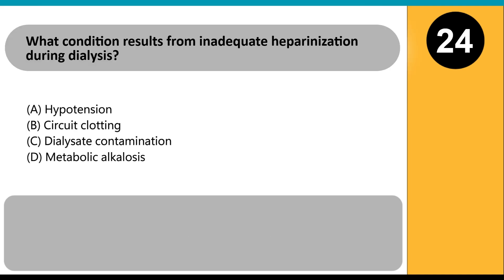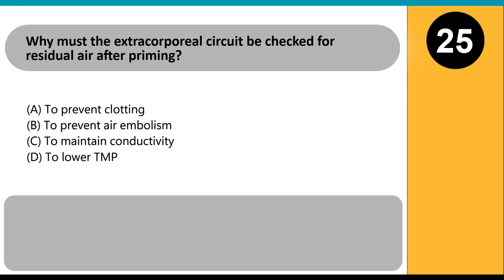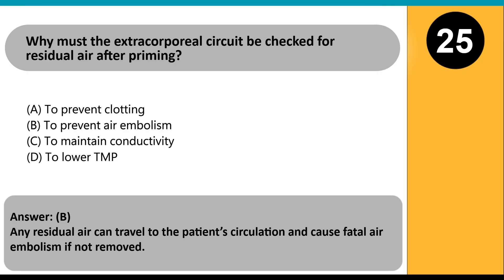What condition results from inadequate heparinization during dialysis? A. Hypotension. B. Circuit clotting. C. Dialysate contamination. D. Metabolic alkalosis. Answer B. Low anticoagulation levels allow clot formation in dialyzer fibers, reducing treatment efficiency. Why must the extracorporeal circuit be checked for residual air after priming? A. To prevent clotting. B. To prevent air embolism. C. To maintain conductivity. D. To lower TMP. Answer B. Any residual air can travel to the patient's circulation and cause fatal air embolism if not removed.